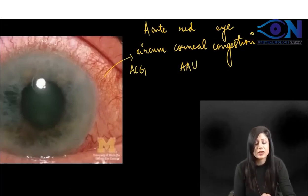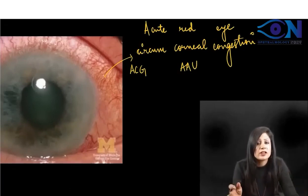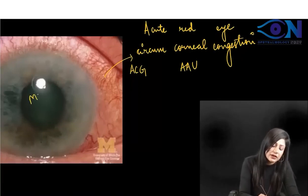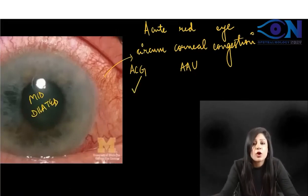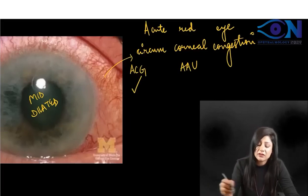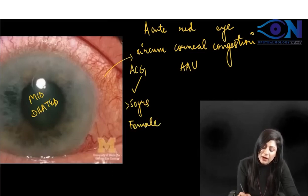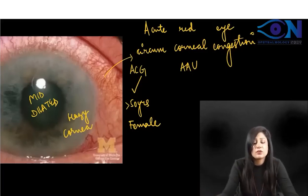Can we say it is uveitis or glaucoma? Circumcorneal congestion will be present in both, but you can see that the pupil is mid-dilated — so because the pupil is mid-dilated, it is going in terms of glaucoma. The patient scenario will be female, more than 50 years, along with hazy cornea. Because of the sudden closure of the angle of the anterior chamber, you will have hazy cornea.